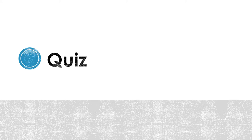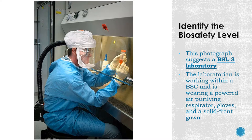Quiz: identify the biosafety level shown in the image, taking note of the presence of the biosafety cabinet and the type of personal protective equipment worn. This photograph suggests a biosafety level 3 laboratory. The laboratorian is working within a biosafety cabinet and is wearing a powered air-purifying respirator, gloves and a solid front gown. Note how the worker is not fully covered by the suit and parts of his neck and ears are exposed — do not let the respirator confuse you into thinking this is a biosafety level 4 laboratory.